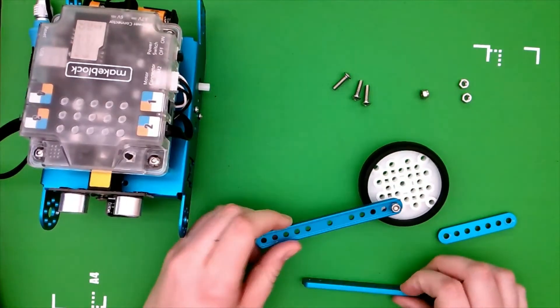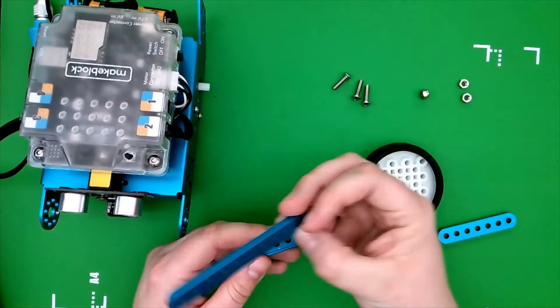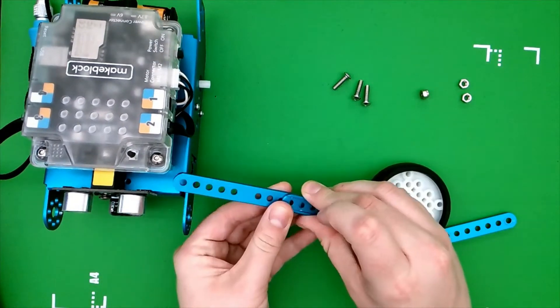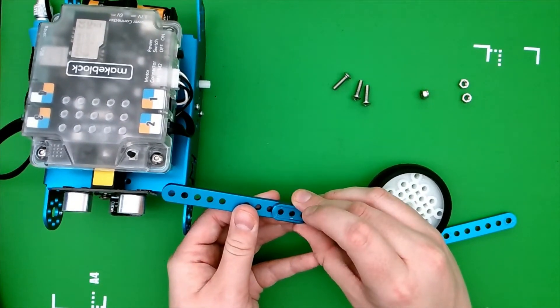Okay, and so for this part we're going to take this blue beam here, the smooth side should be facing you, align it with the two bottom holes just like that.